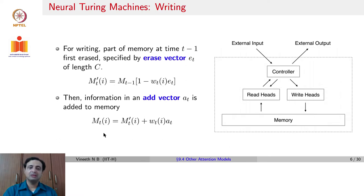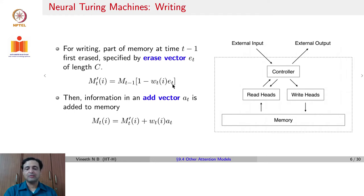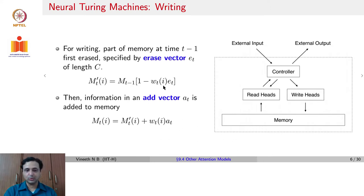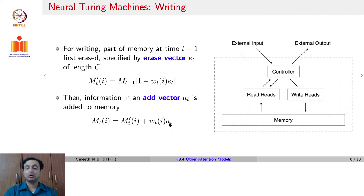Similarly, for writing, a part of memory at time t−1 is erased using an erase vector et. If you have an erase vector et, then 1 minus the erase vector is what is retained. So if you had Mt−1 into (1 − Wt(i)) into et, that gives you the memory at the new time step. Then you add a weighted combination of an add vector, which is added to the memory at that particular i-th row.